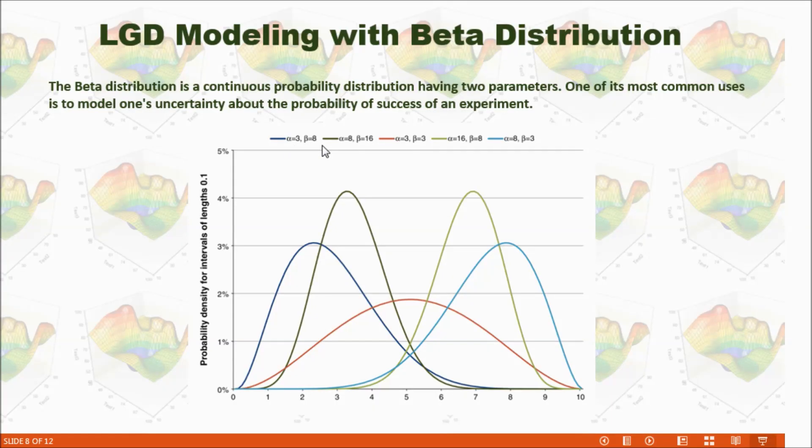If alpha and beta are different, it will show different distribution. For example, if alpha is 3 and beta is 8, you can see this distribution more lean towards the zero. And on this graph, if alpha is 8 and beta is 3, you can see the probability density more lean towards the far end.